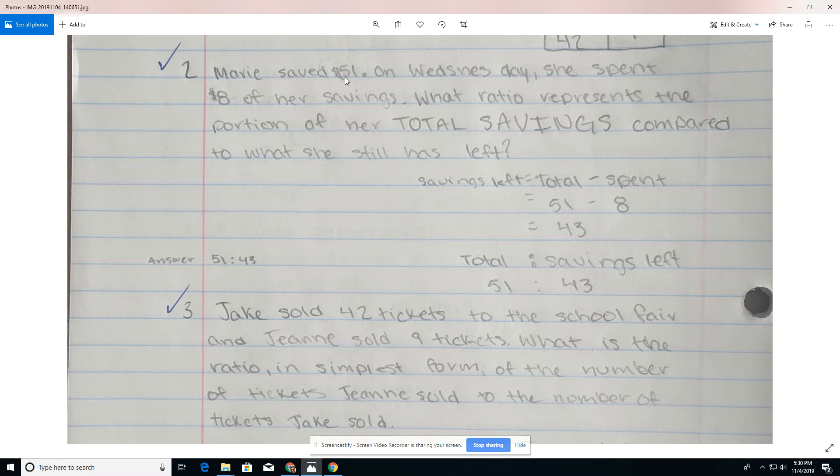Problem number two, Marie saved $51 on Wednesday. She spent eight of her savings. What ratio represents the portion of her total savings compared to what she has left? The key here is that we have to calculate what she has left. So here we're going to write out the equation as a sentence, an equation sentence. Savings left equals total amount of savings minus what she spent. We replace the variables we know. 51 was the total number of dollars she saved. Eight was the dollar she spent. 51 minus eight is 43. Then we got to ask, what are we asked to do? We need to create a ratio that represents total savings compared to what she has left. So we create a ratio of total to savings left. Then we just enter in the data underneath 51 to the right, 43. We look for any kind of common factor that we can reduce this by and we can't. So it just stays there. And that is our answer.